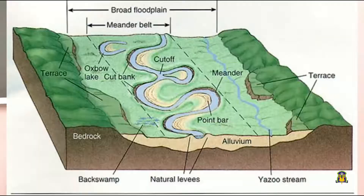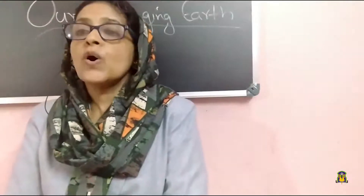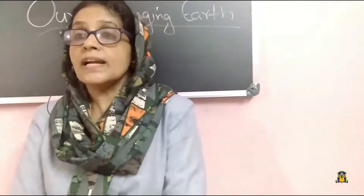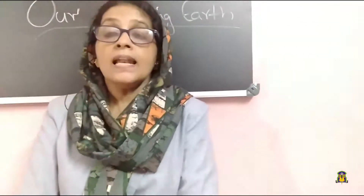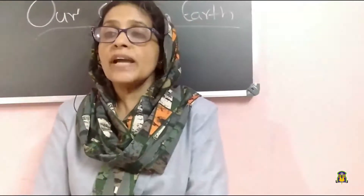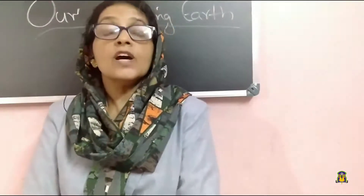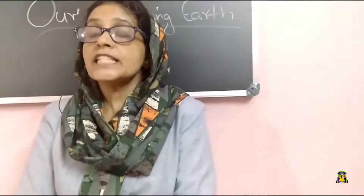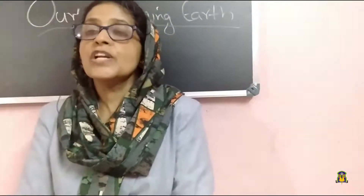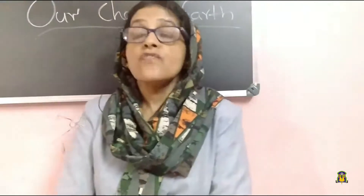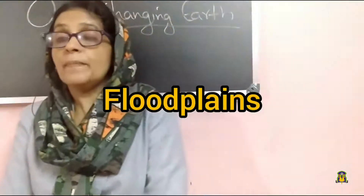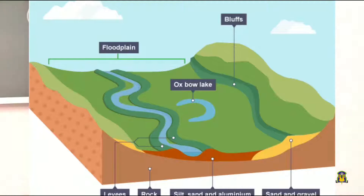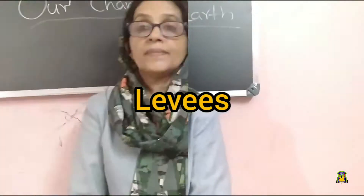At times, the river overflows and causes floods. As it floods, it deposits layers of fine soil and minerals called sediments. This leads to the formation of flat, fertile floodplains. The raised banks are called levees.